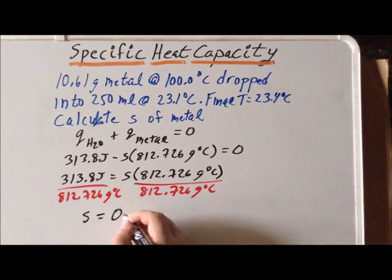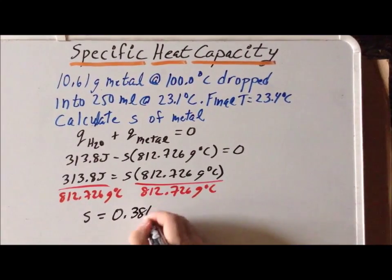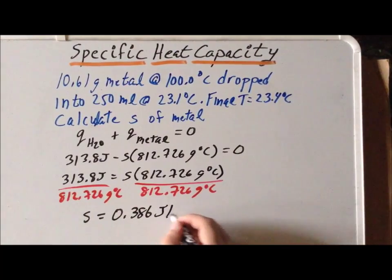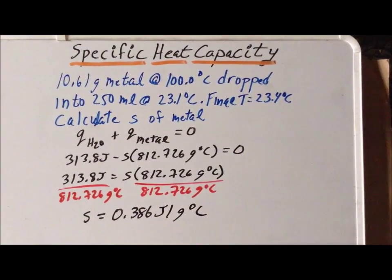And we add the proper units, which are joules per gram degree centigrade. Note that if you were to ever find the specific heat capacity to be negative, that is guaranteed to be an incorrect answer. So the specific heat capacity must be a positive value. And the positive value in this case is 0.386 joules per degree centigrade, which just happens to be the specific heat capacity of copper.